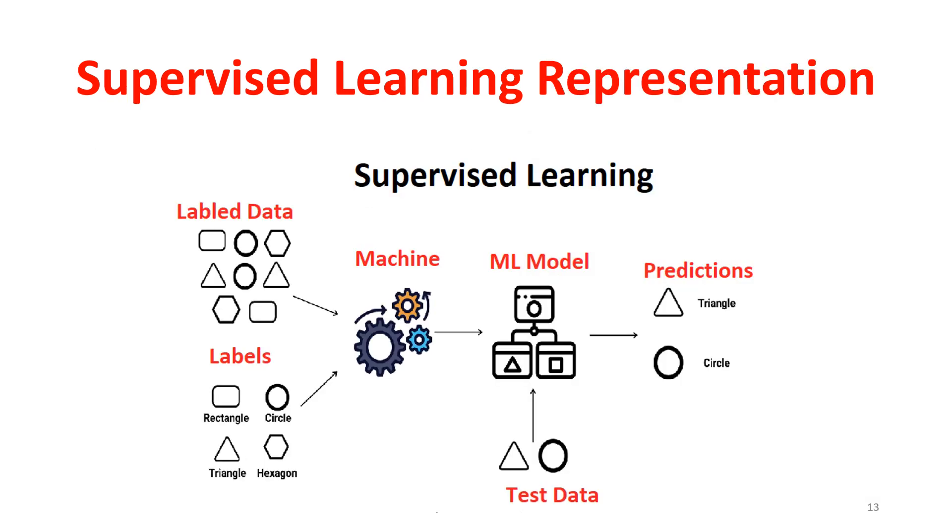Supervised learning representation: here in supervised learning, the labeled data is given to the machine and the labels for identifying the data are also given. Based on the test data, the machine learning analyzes the data that has been given and it provides the output prediction as this triangle, circle, rectangle, likewise.